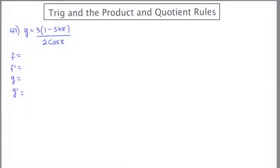I'm going to start off with number 47 by simplifying the numerator a little bit. I don't like the fact that it's written as a product, so I'm going to distribute that 3 through and get 3 minus 3 sine x over 2 cosine x. Now you'll notice I've only got one problem set up on this page, so that's never a good sign — it's probably going to take a lot of room.